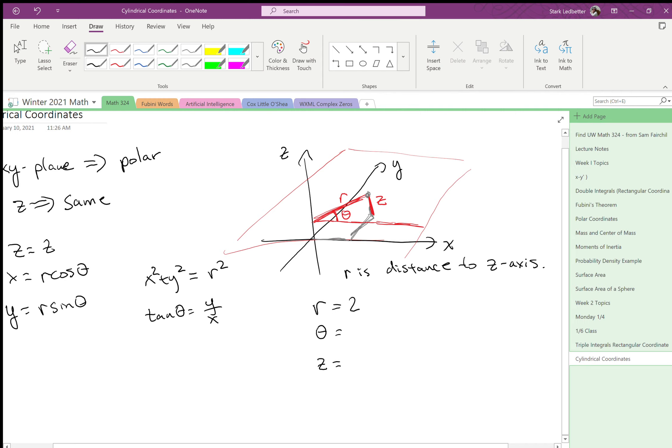So r equals two is actually going to be, we're going to get a circle in every plane going up, and we actually get a cylinder. So the graph of that is a cylinder in cylindrical coordinates. Thus the name cylindrical coordinates, of course.